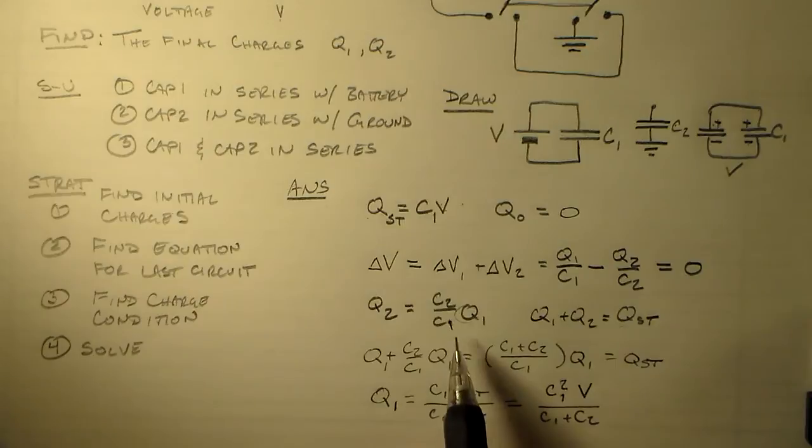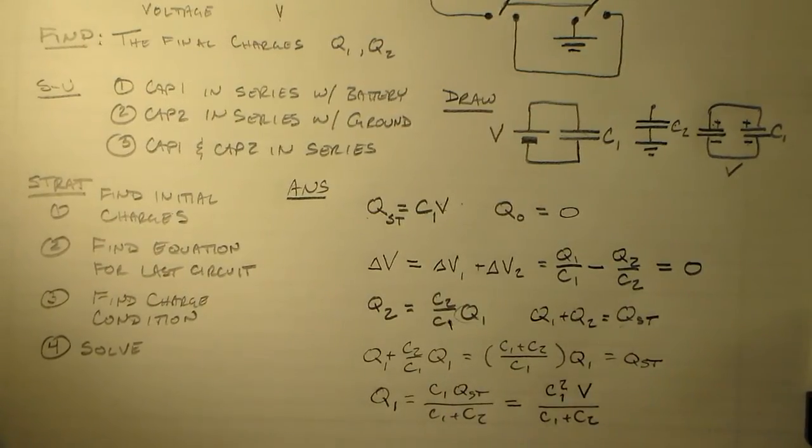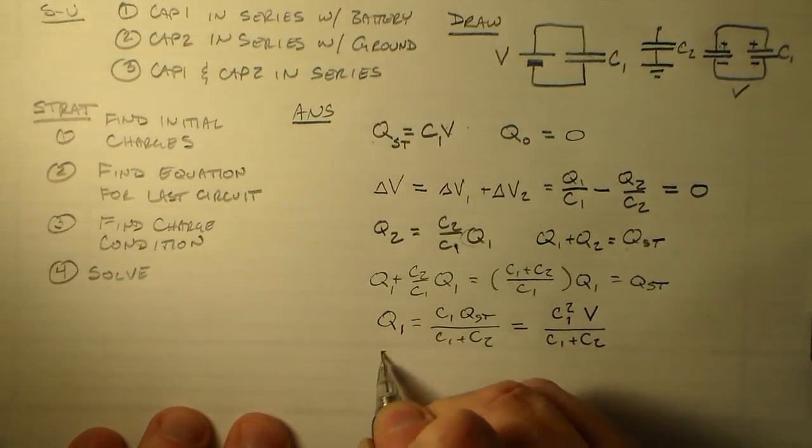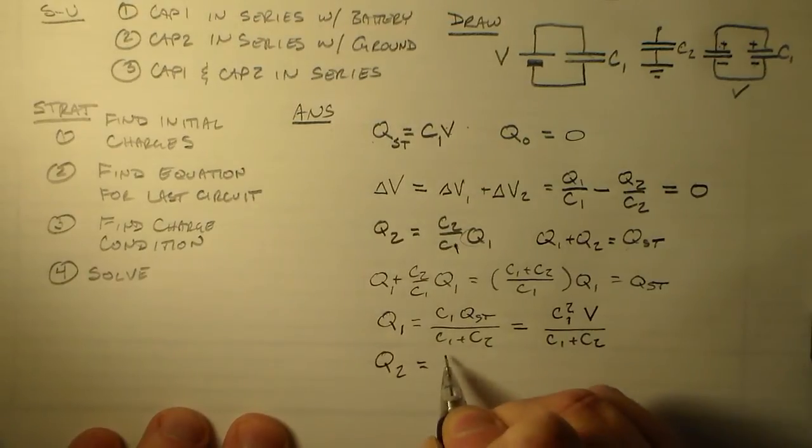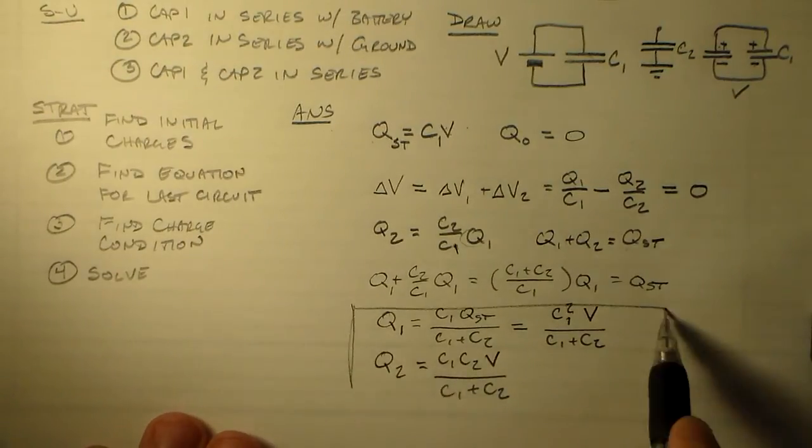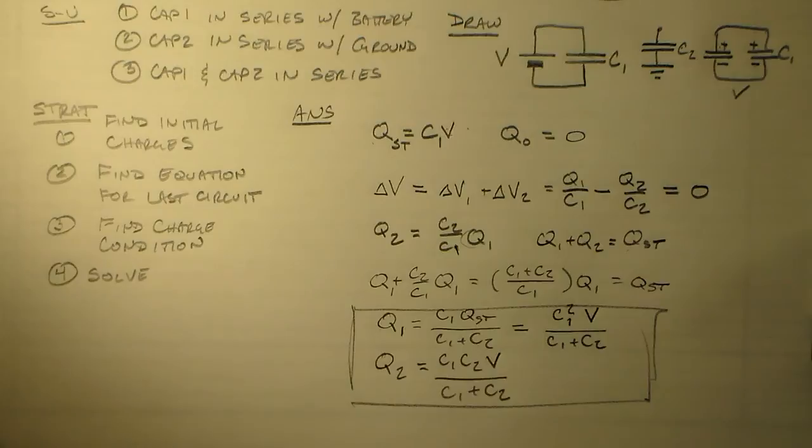And to get Q2, we just have to swap out one of these C1s for a C2. So probably the best idea is to move this up a little bit. So Q2 is equal to C1 times C2 times V over C1 plus C2. And so we are done. Isn't that beautiful? And that's the sort of thing that you're expected to do on your homework. You'll also look at some transients. I'll talk more about transients in a later video. I'll see you in class and have a great night.